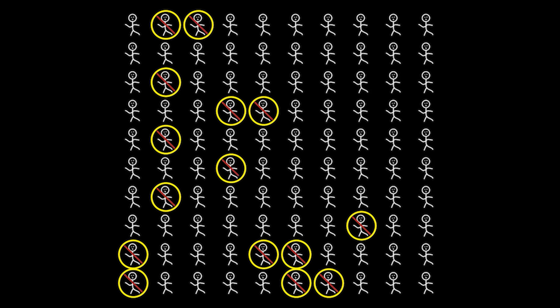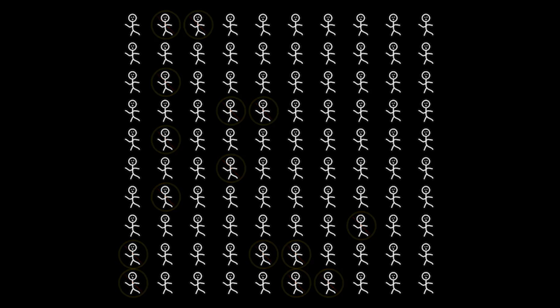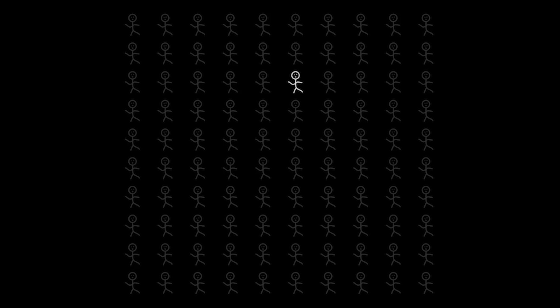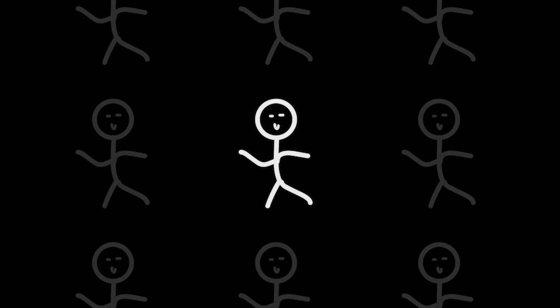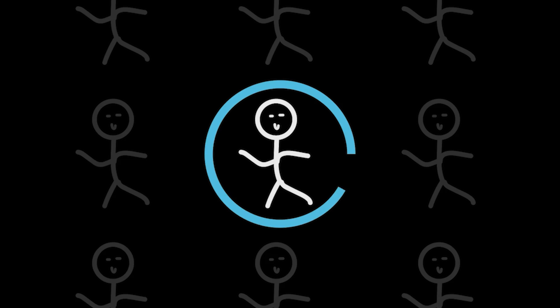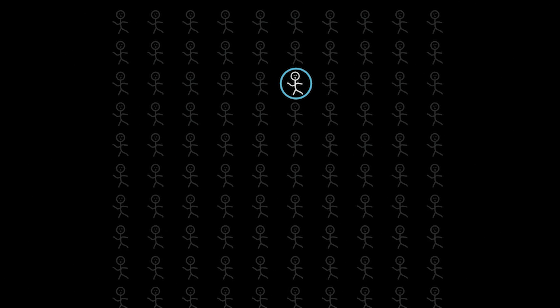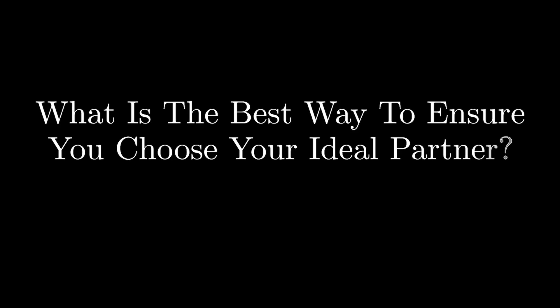The other important thing to note is that you don't know anything about the person before you speak to them, which means you can't see a particular person and decide to speak to them first, or specifically decide to avoid some people as well. The order in which you speak to people is completely random. The question of this video is now obvious: what is the best way to ensure that you choose your ideal partner?